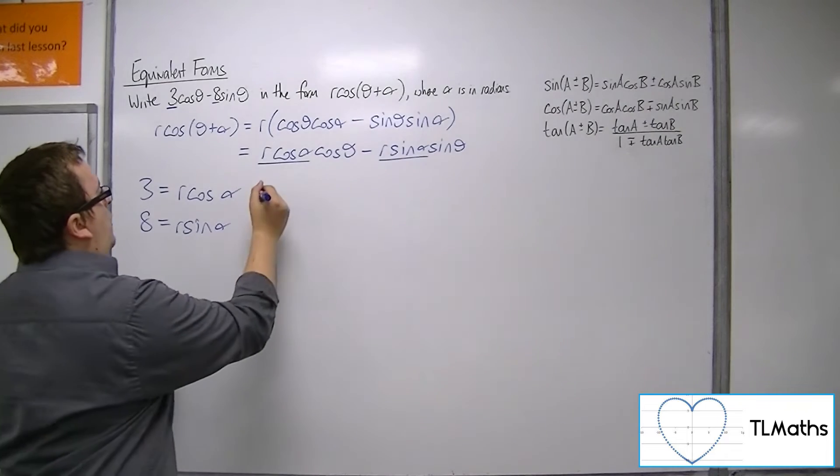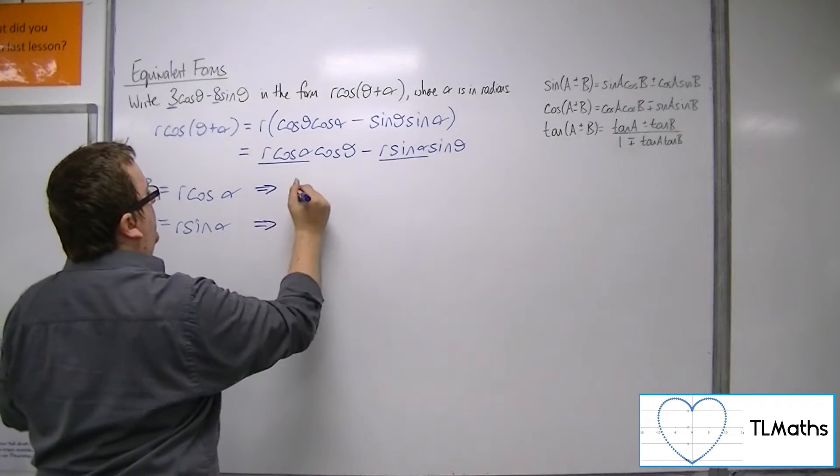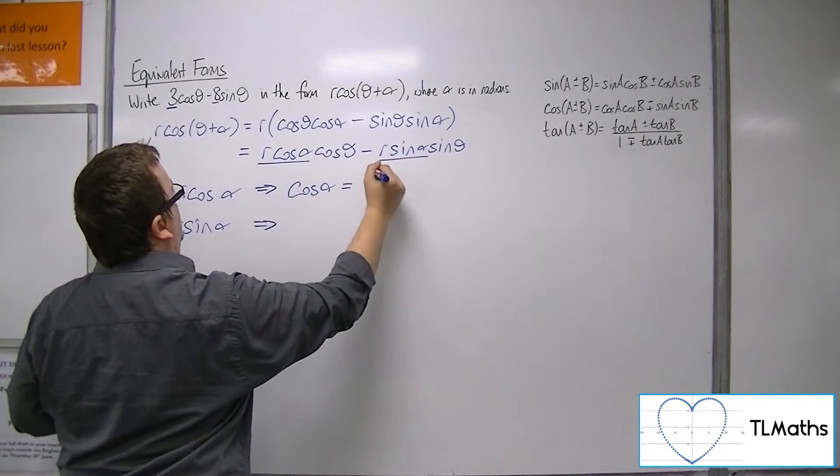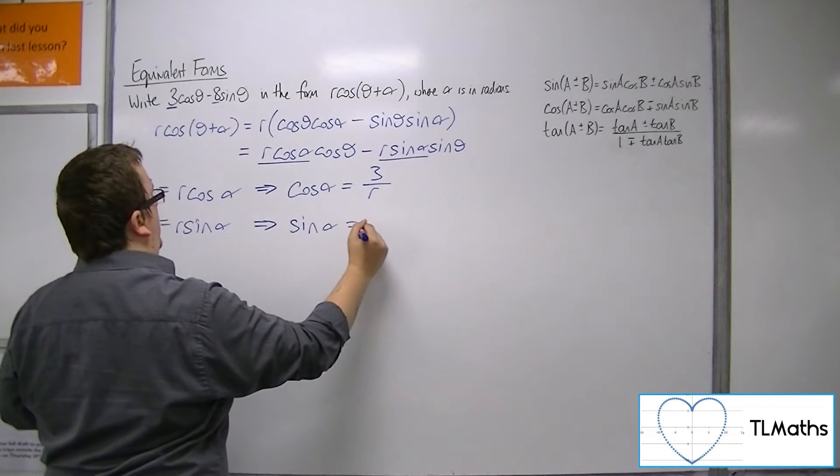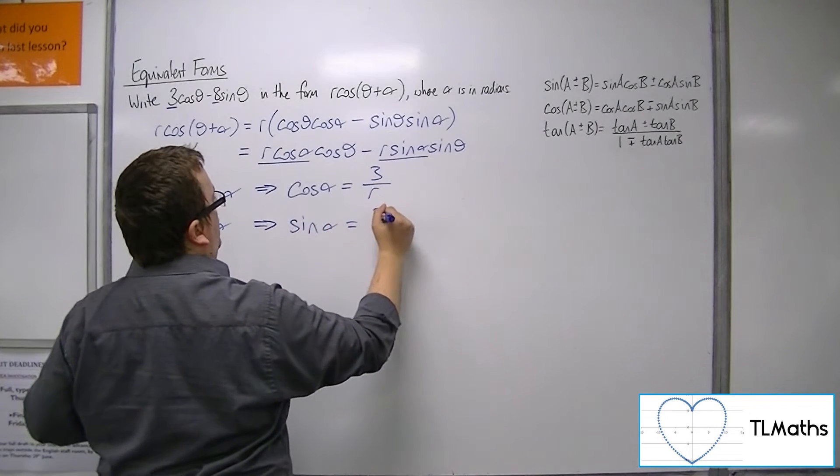Now if we rearrange both of these, cos alpha is 3 over r, sin alpha is 8 over r.